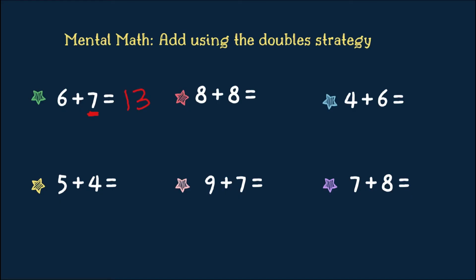8 plus 8. That's easy. Double 8 is 16. 4 plus 6. Our smaller number is 4. We always double our smaller number. So, 4 plus 4 is 8. And 6 is 2 more than 4. So, double 4 is 8 plus 2 equals 10.